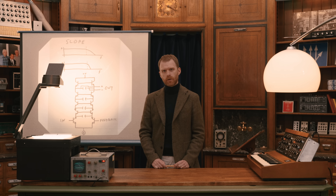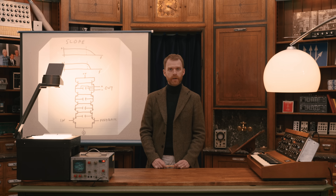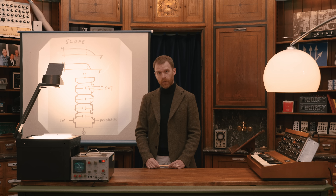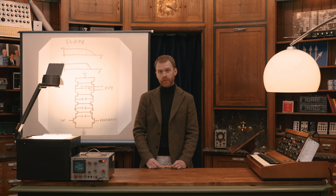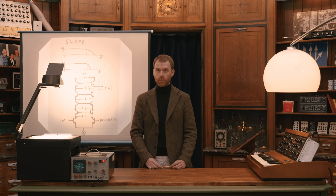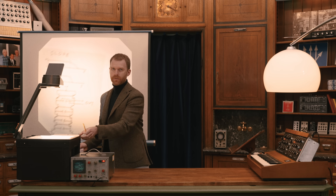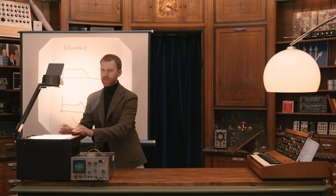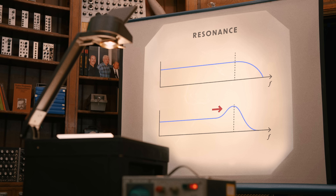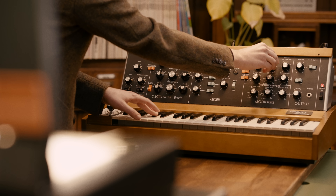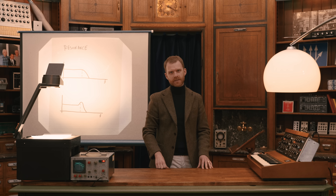There are two controls typically associated with the filter on a synthesizer. One is the cutoff frequency, which determines where in the frequency spectrum filtering begins to occur. The other is called resonance — sometimes it's called emphasis, or feedback, or simply Q. Resonance takes the output of the filter and feeds it back to the input. As we increase this feedback, as we increase the resonance of a filter, we create a resonant bump at the cutoff, emphasizing all frequency content at the cutoff. When the cutoff frequency is moving under voltage control, raising the resonance greatly emphasizes this motion, creating a distinctly nasal tone.